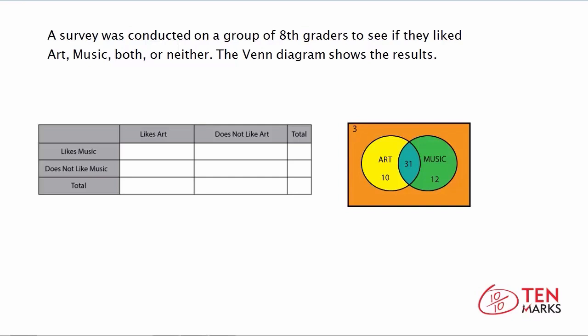Let's begin by finding the total number of people surveyed, which is an important value. With a Venn diagram, you go to each area and add up the numbers: 3 plus 10 plus 31 plus 12 equals 56. So 56 eighth graders were surveyed. We put 56 in the bottom corner of the table, which represents the total overall.